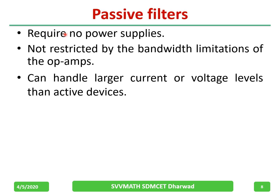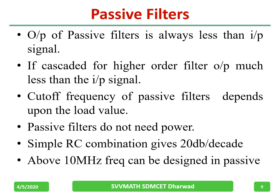Some points about passive filters: they require no power supplies and are not restricted by the bandwidth of any active components. They can handle larger current and voltage levels compared to active devices. However, the output of a passive filter is always less than the input, and when cascading, the output becomes still lesser. Also, the cutoff frequency of a passive filter depends on the load value — if R and the load are both resistive, their parallel combination changes the cutoff frequency. A simple RC combination gives a 20 dB per decade roll-off rate, and above 10 MHz, we can design using passive components.